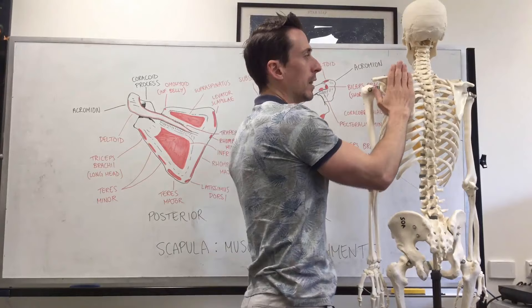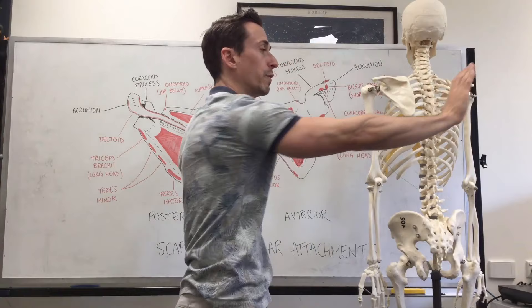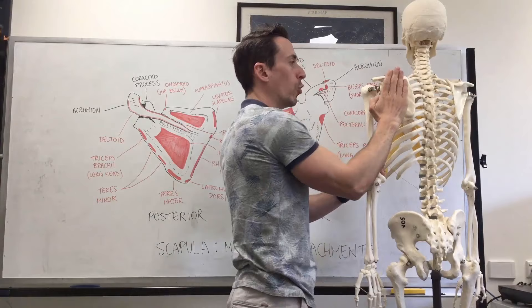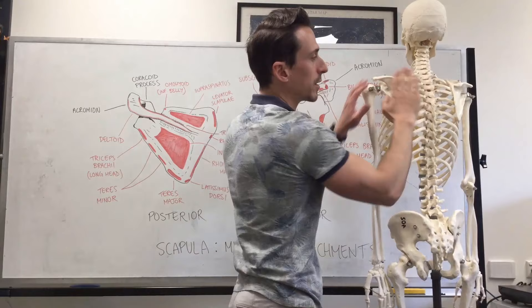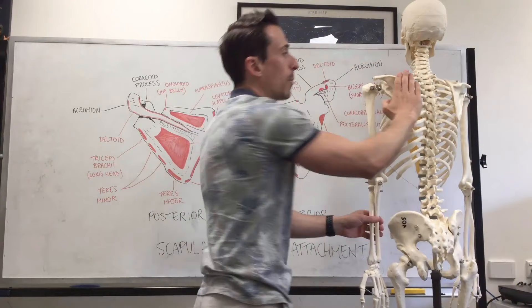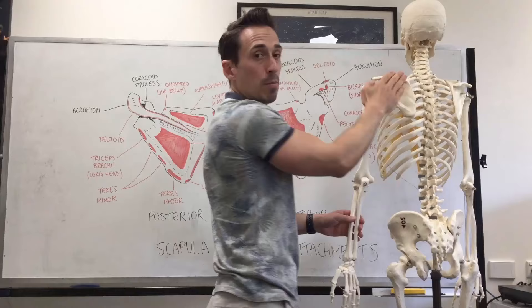If we look at this on Frank: elevation, depression, protraction — even though I did this pushing forward or boxing punch, what happens is the scapula doesn't move forward because there's a ribcage in the way, so the scapula needs to move around the ribcage — that's protraction. Retraction is basically bracing the shoulders back. Lateral rotation or upward rotation is opening up or raising the glenohumeral joint, and medial rotation is bringing it back down.